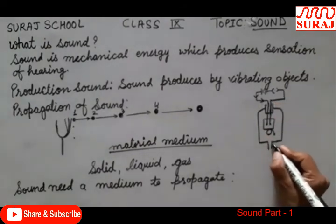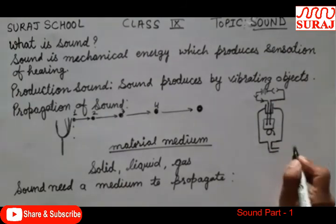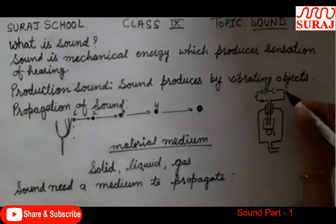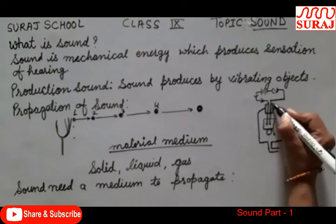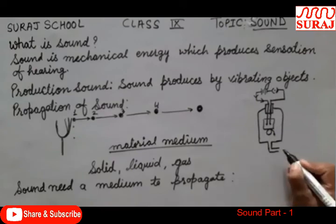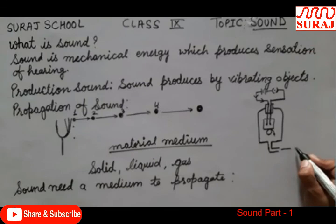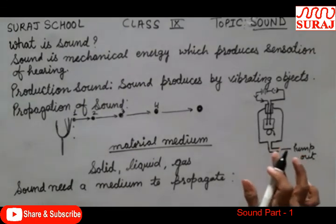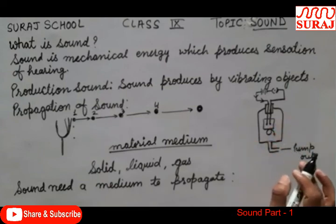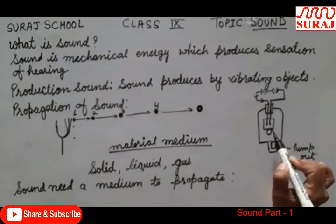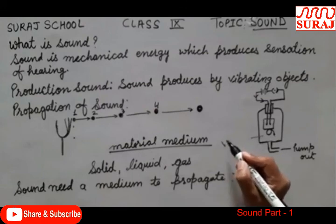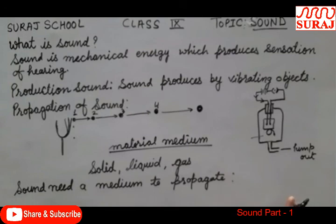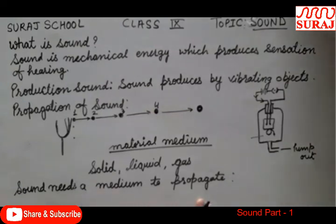Aur bell jar ke niche ek vacuum pump se usko jod denge. Jaise hi first hum key ko on karenge, to hammer bell se ja kar takraega, aur hume sound sunayi deta hai. We can hear the sound. When a medium is present — but when a medium is not present, we cannot hear the sound. This experiment proves that sound needs a material medium to travel. Sound ko travel karne ke liye material medium ki zaroorat hoti hai.